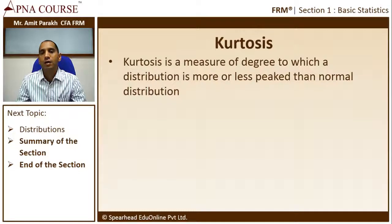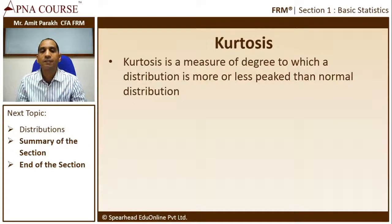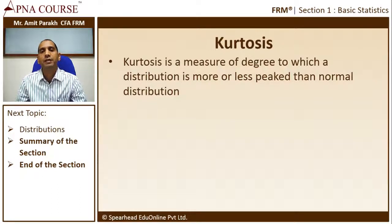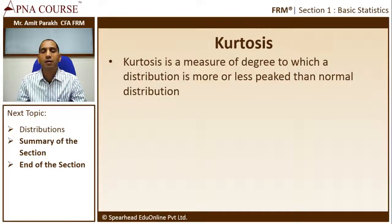Let's look at kurtosis now. Kurtosis tries to measure the peakedness of the distribution. Formally put, kurtosis is the measure of the degree to which a distribution is more or less peaked than a normal distribution. Take the normal distribution as the benchmark. If a distribution is more peaked than normal, it has greater kurtosis; if it is flatter than the normal distribution, its kurtosis is going to be lower than normal.